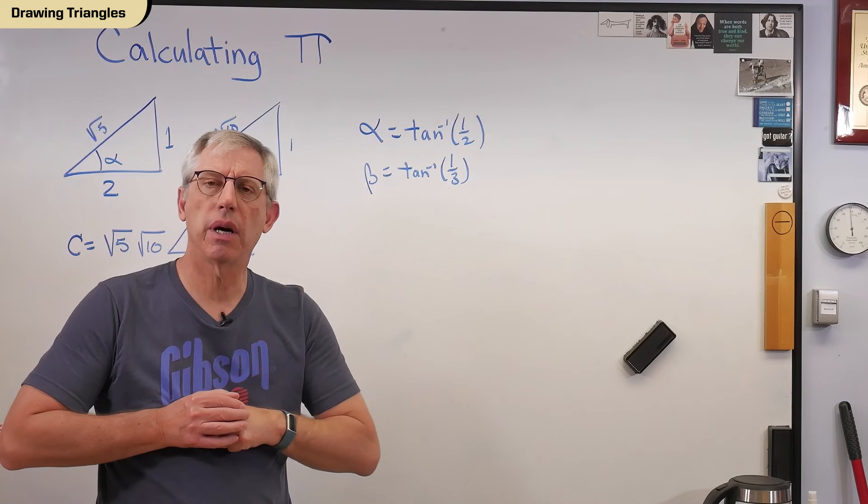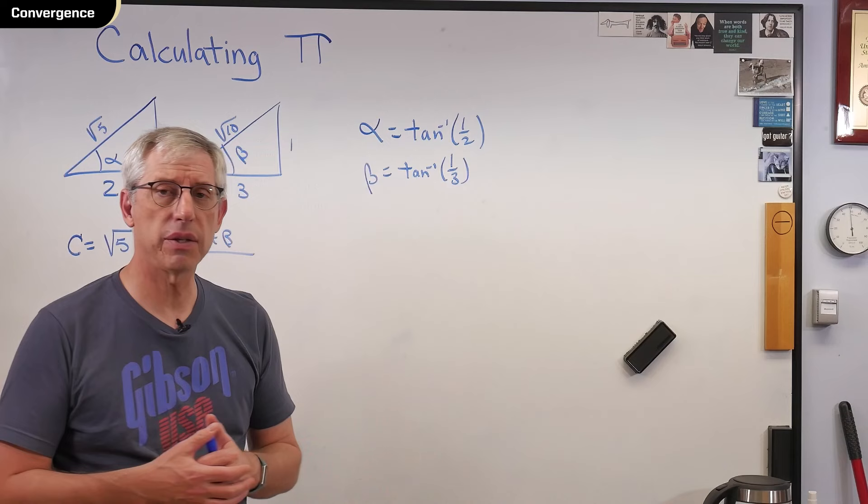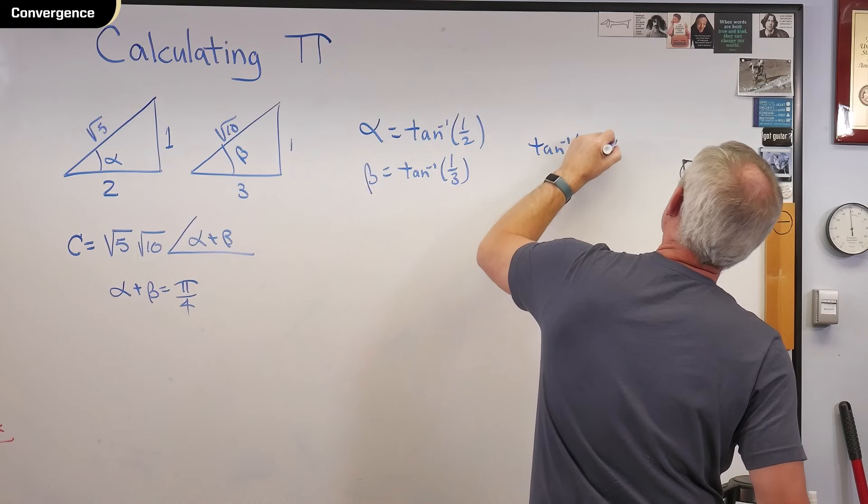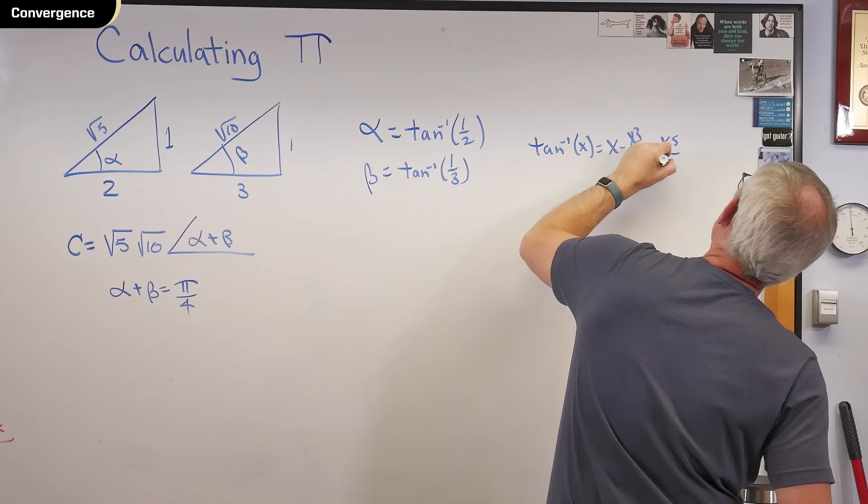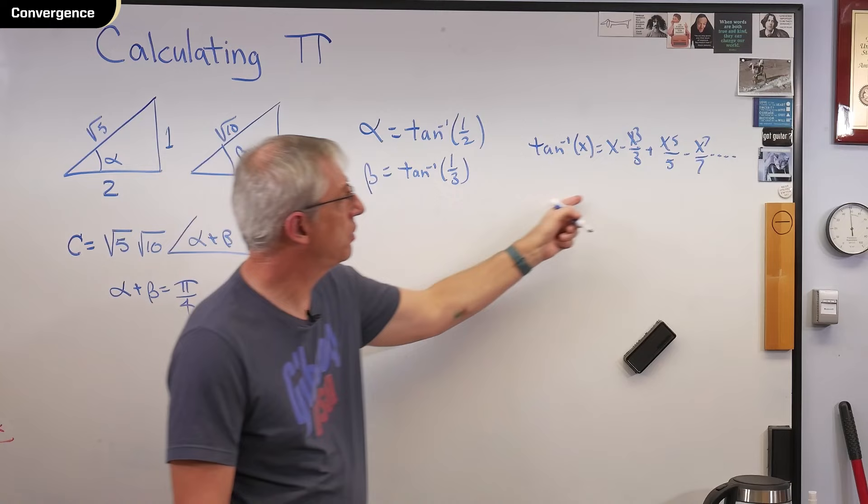Well, remember that equation we had, the series we had for pi where it was inverse tangent of one, and it took forever to converge? One of the things I mentioned was if the argument were less than one, the series would converge faster. Remember that the inverse tangent of x is x minus x cubed over 3 plus x to the fifth over 5 minus x to the seventh over 7. The argument x, if that argument was less than one, these terms would get small pretty quickly.